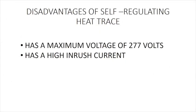Now let's look at the disadvantages of self-regulating heat trace. The first disadvantage is that it only goes up to 277 volts. Compared to MI cable which can use 480 volts, MI cable will achieve a slightly longer circuit — though at 277 volts you're still getting a very long circuit. The next disadvantage is high inrush current. When you energize self-regulating heat trace, there is a very high inrush current, and when designing the system you must size the breaker at the inrush current, not the operating current.